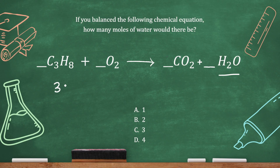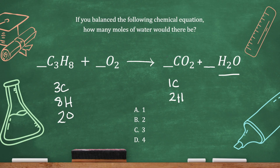We've got three carbons on the left, eight hydrogens and two oxygens. And then we've got one carbon on the right, two hydrogens, and two plus one makes three oxygens.